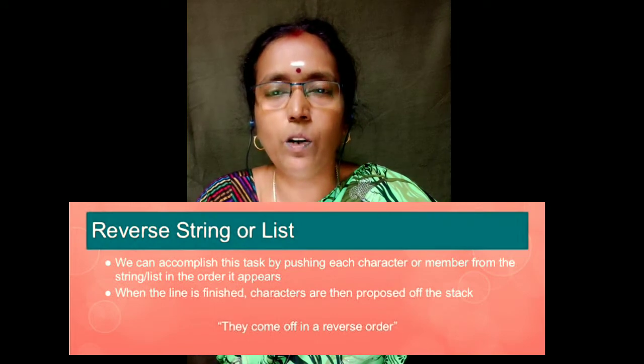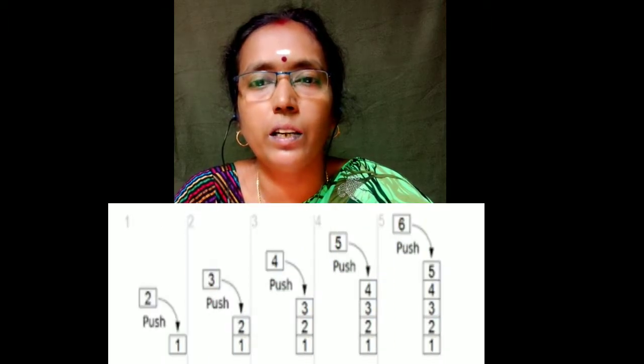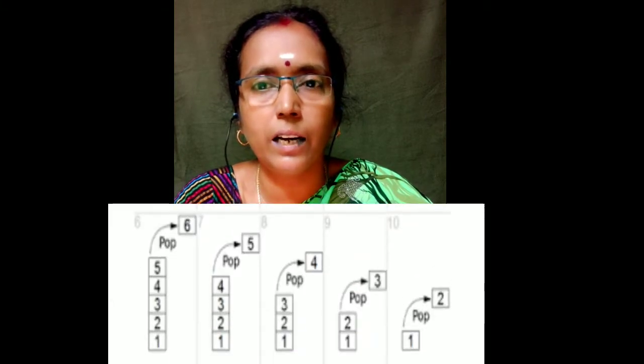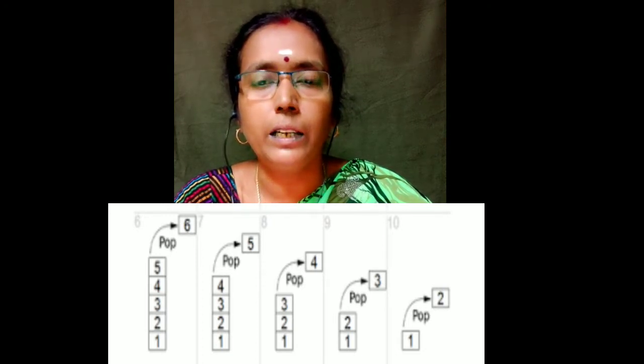The first application is reversing a string. A string is a combination or collection of alphanumeric characters. We are going to reverse a string by pushing characters one by one into a stack. Since the stack is LIFO, the last character inserted can be removed first. So if we pop the characters one by one from the stack, we will get the reversed string.